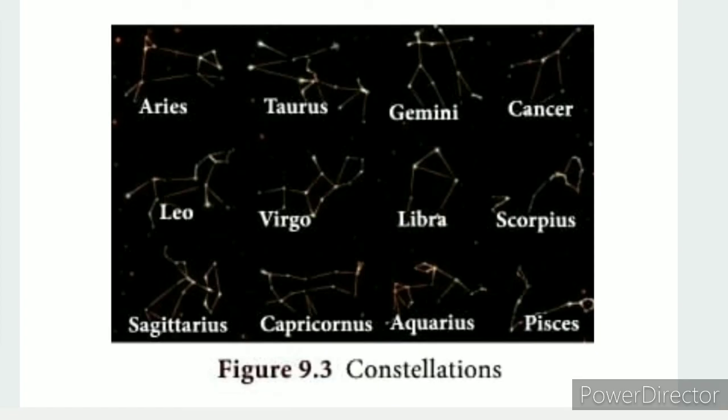The zodiac constellations with their Tamil names are: Aries (Mesham), Taurus (Rishabha), Gemini (Miduna), Cancer (Karkatam), Leo (Simam), Virgo (Kanni), Libra (Tulam), Scorpius (Virchiham), Sagittarius (Dhanus), Capricornus (Makaram), Aquarius (Kumbam), and Pisces (Meenam).